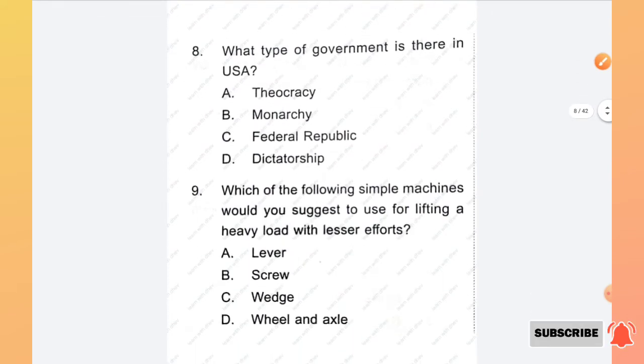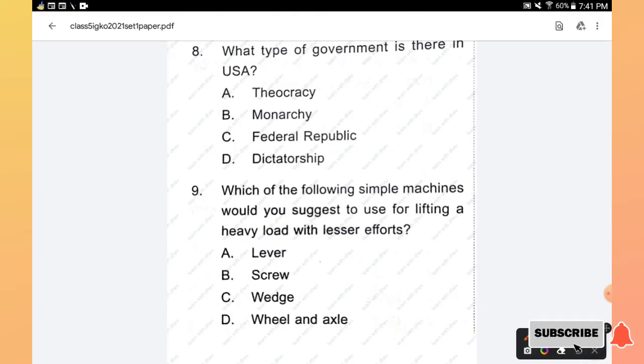Question number 8: What type of government is there in USA? Theocracy, monarchy, federal republic, dictatorship. The right answer is federal republic. Option C is the right answer.